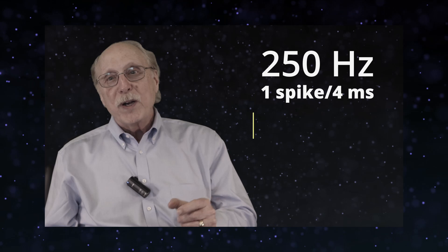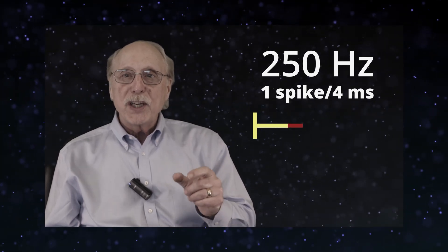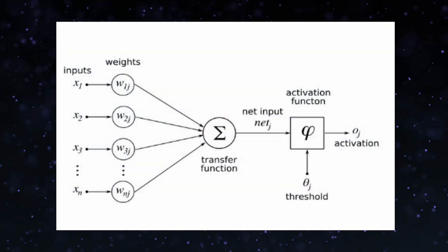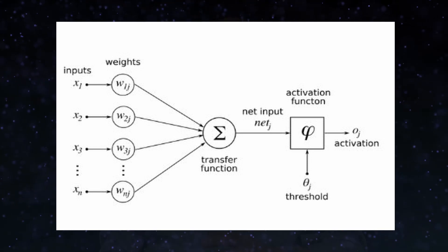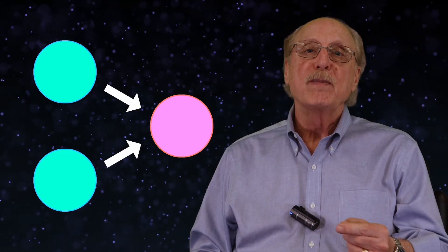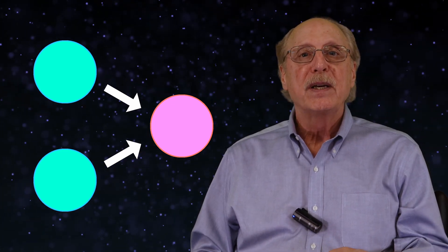In part one, we examined how a neuron's slowness makes its approach to learning fundamentally different from the thousands of samples required by machine learning. Now we'll take a look at the fundamental algorithm of the perceptron and how it differs from any biological model. The perceptron underlies most machine learning algorithms and is fundamentally different from any model of a biological neuron.